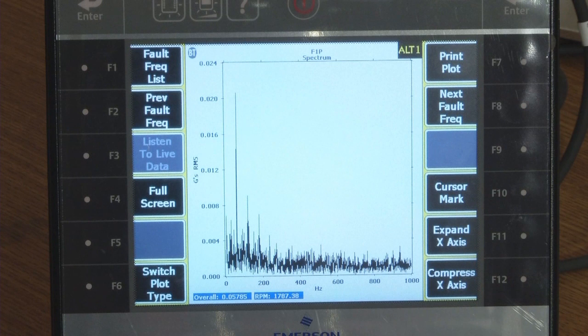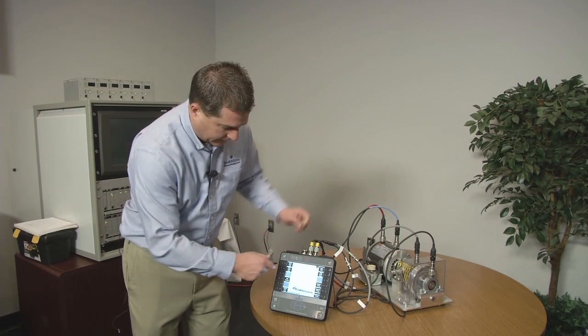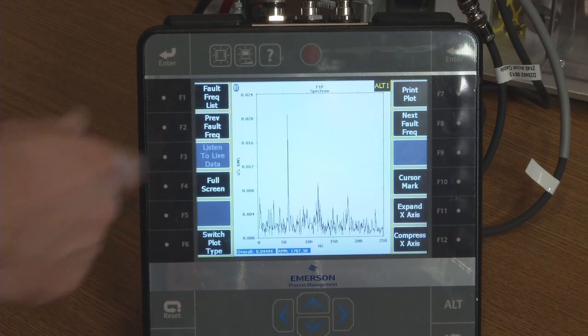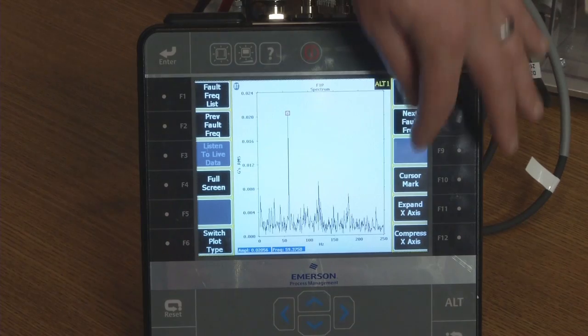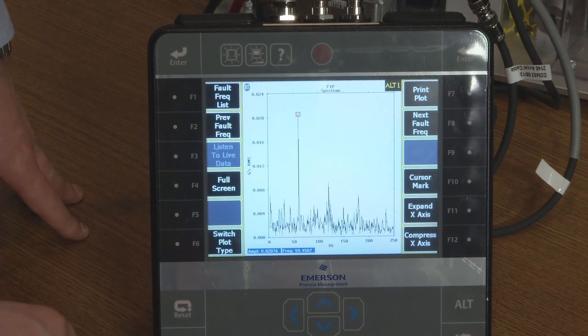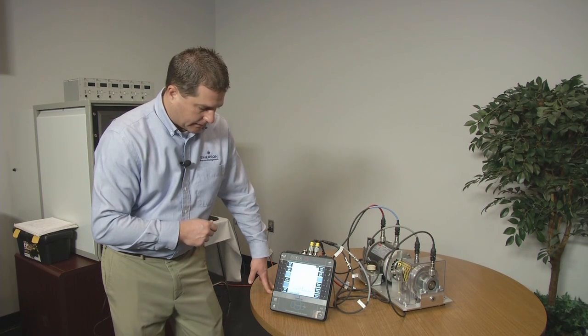And so you can see it come up here and I've got this really large peak down here in the lower frequency zone. And I'm assuming that's probably my two times turning speed peak. I'm going to expand my X axis by pressing F11 here so I can see that peak a little better. I'm going to touch the screen and I'm going to mark this peak.